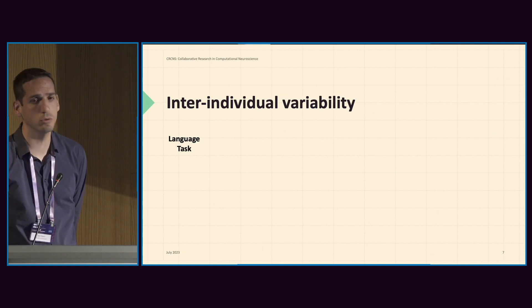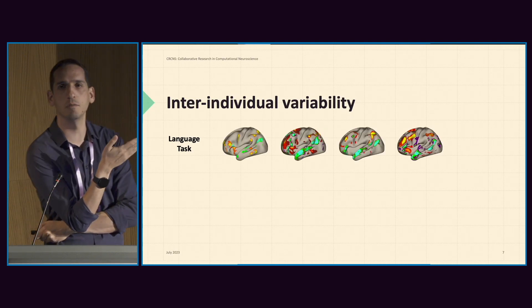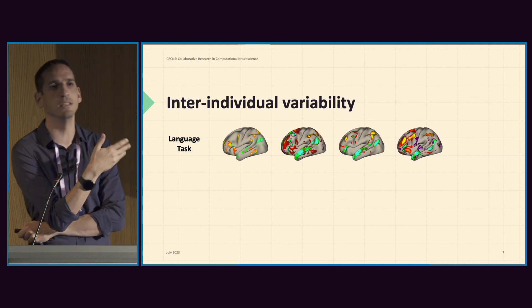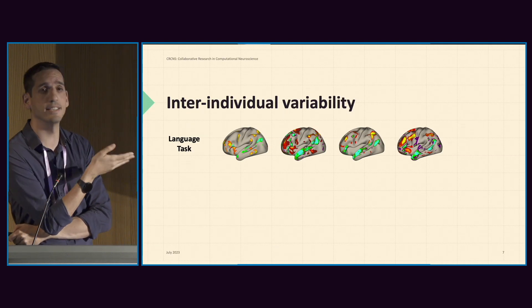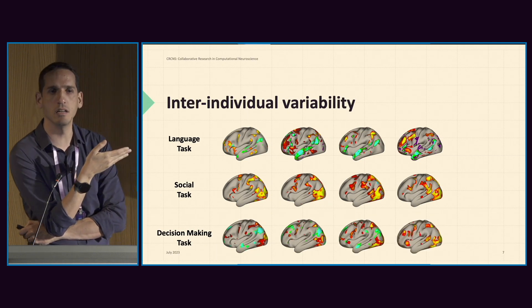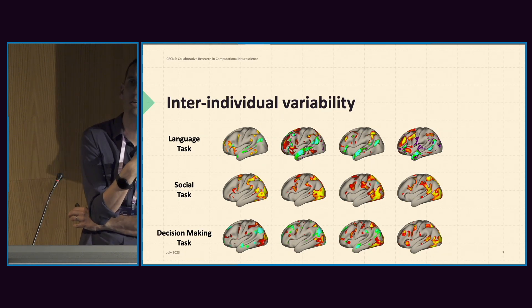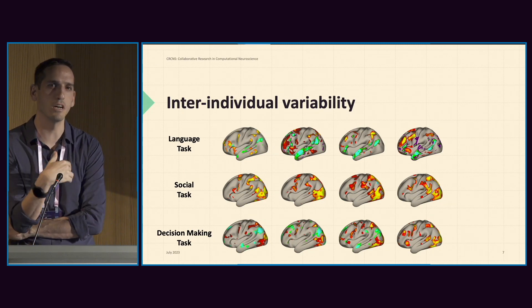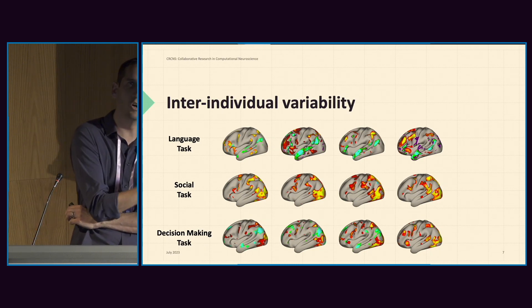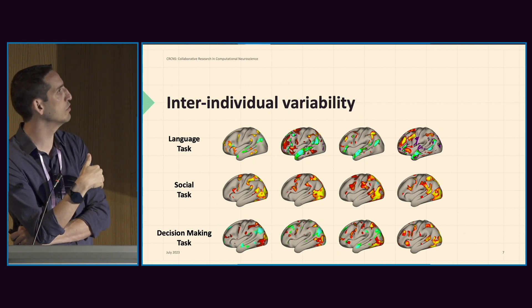When people are asked to perform the same task — for this example, a learning task — these are four different participants from the Human Connectome Project performing a language task. We can see that when people are doing the same task, there is variability in task activity. Obviously there is overlap, but different people exhibit different patterns of brain activity. We see the same thing in different cognitive domains as well. When using group statistics, we usually treat this variability as noise and ask questions about what's similar across participants. But I find it interesting to also ask why we see these kinds of differences — is it noise, physiological noise, or is it something important related to the biology of our participants?